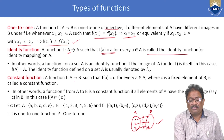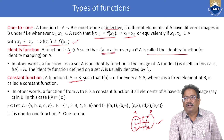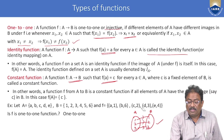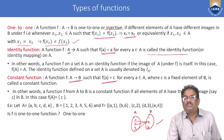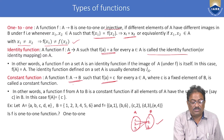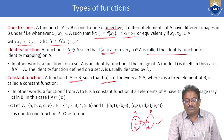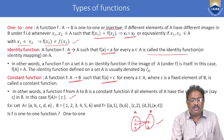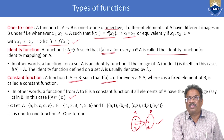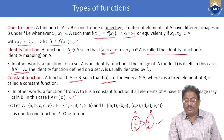The third type is the constant function. A function f from A to B is said to be constant if f(a) = c for all elements a in A, where c is a fixed element of B. That means all elements of A map to the same single image. In the identity function f(a) = a, whereas in the constant function f(a) = c.